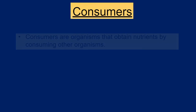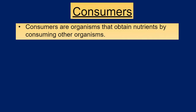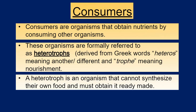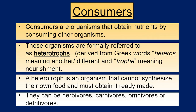The second category is consumers. These are organisms which obtain their nutrition by consuming other organisms, so they depend on other kinds of organisms for their nutrient content. These organisms are formally referred to as heterotrophs — from Greek 'heteros' meaning another and 'trophée' meaning nutrients. A heterotroph is an organism that cannot synthesize its own food material and must obtain ready-made food. They can be herbivorous, carnivorous, omnivorous, or detritivorous — all of them fall under the category of consumers.